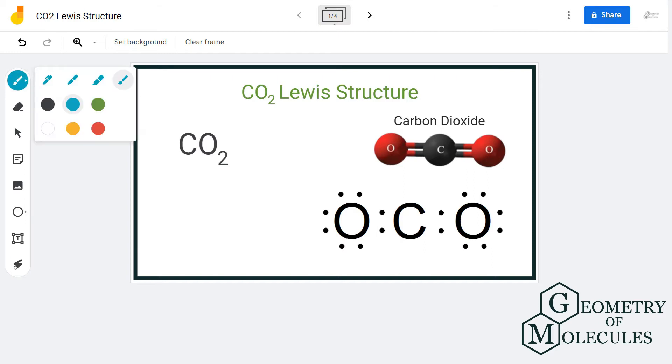To know the Lewis structure of this molecule, we shall first look at the total number of valence electrons. Carbon has four valence electrons, whereas each oxygen atom will have six valence electrons. So in total we'll have 16 valence electrons.